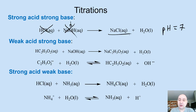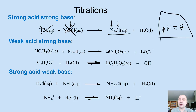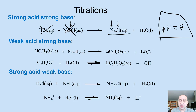Neither sodium ions nor chloride ions will react with water to form acids or bases, so for strong acid/strong base, you always have a pH of 7. But that changes when you do a weak acid/strong base titration, because the salt you are forming actually contains a conjugate base.